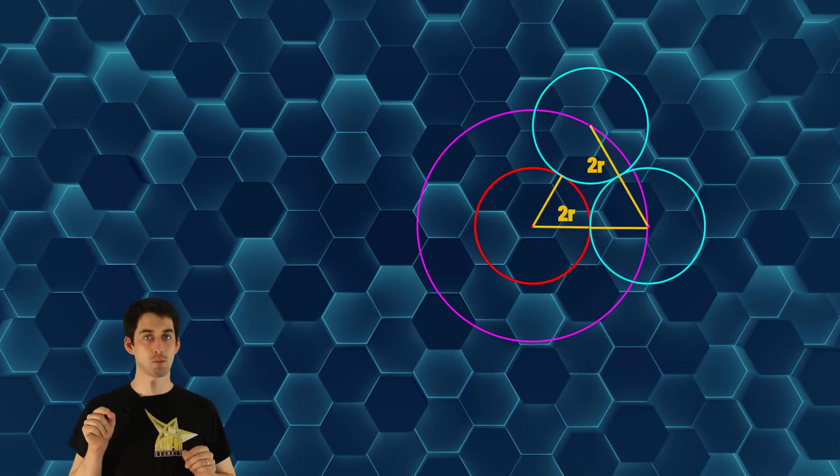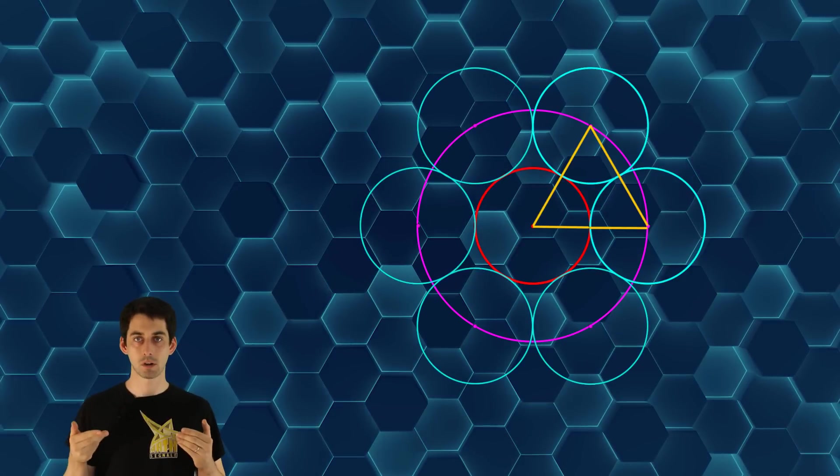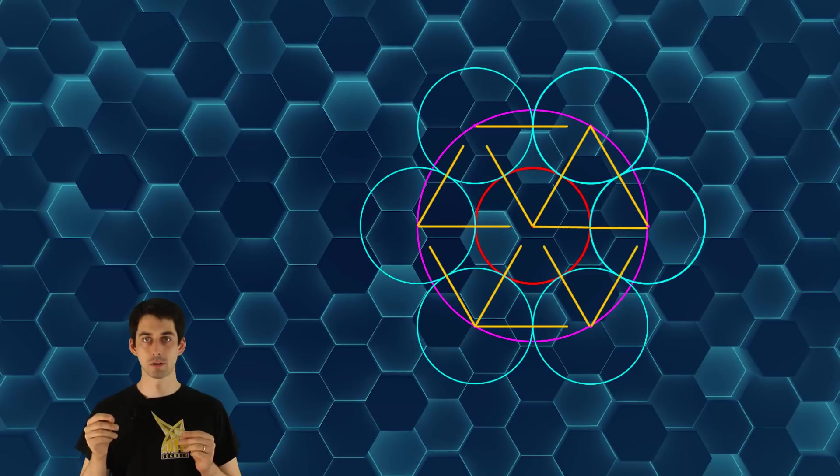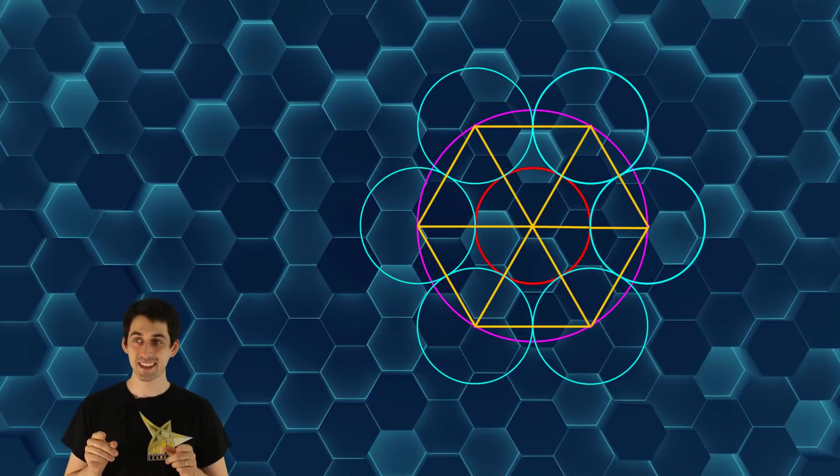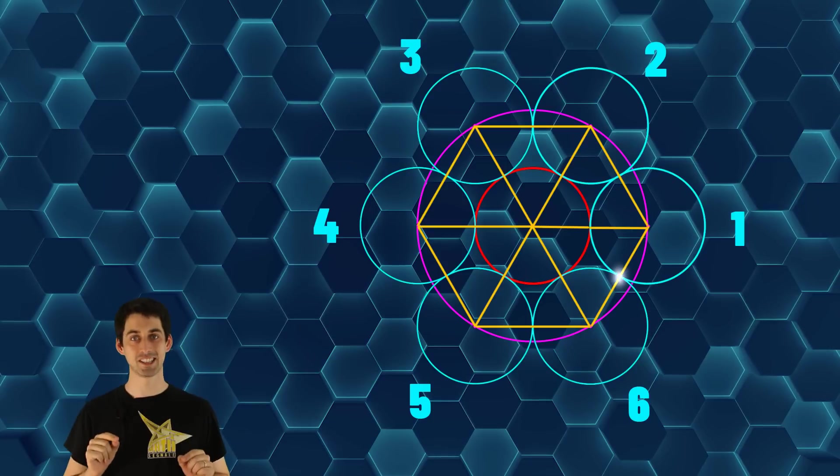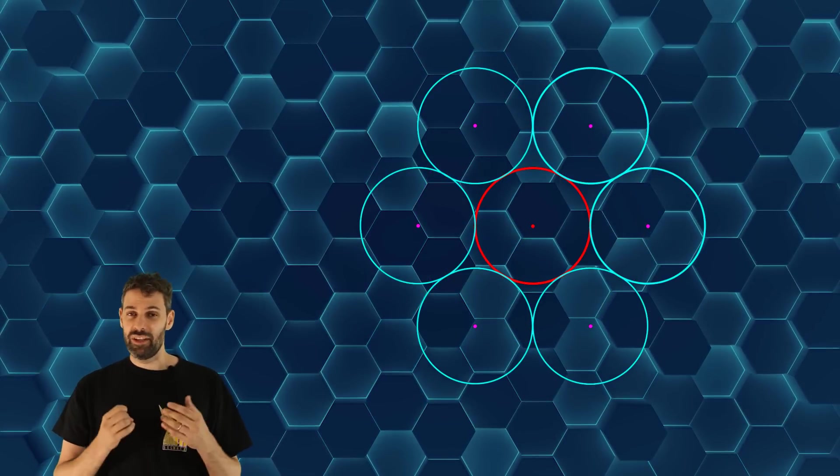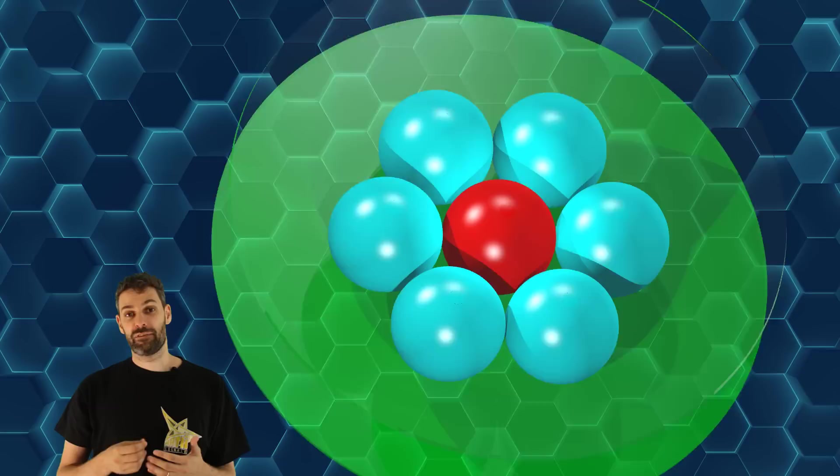But wait, this is an equilateral triangle, so we can go on adding more and more circle, and the centers of the blue circle will form a regular hexagon. So yes, there are just six blue circle, and the last one is tangent to the first one. Great!